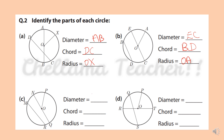For picture C: diameter is NQ, chord is MR, and radius is PO. For picture D: diameter is RT, chord is QS, and radius is OP.